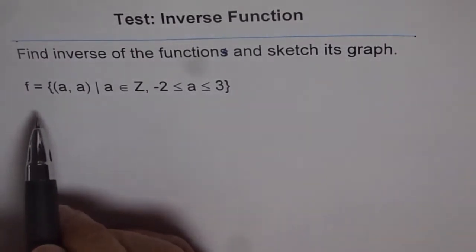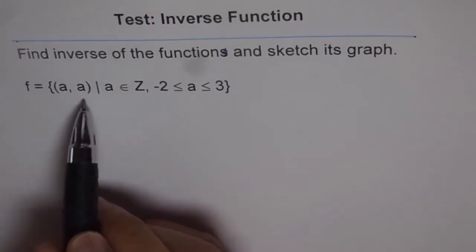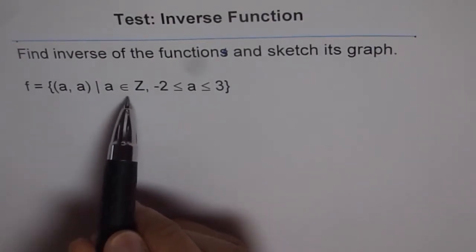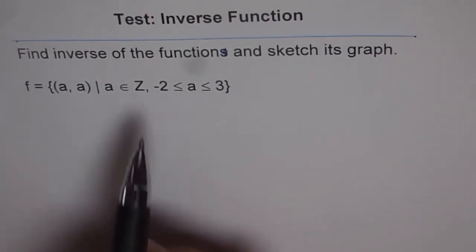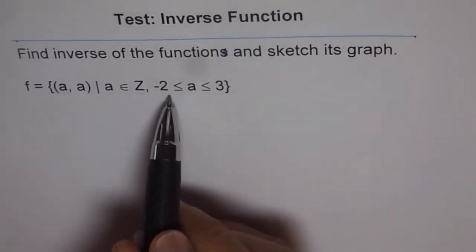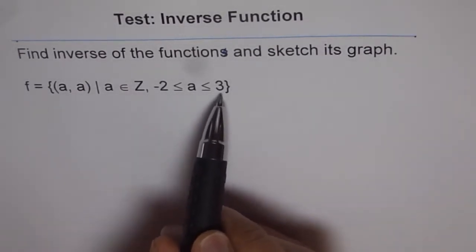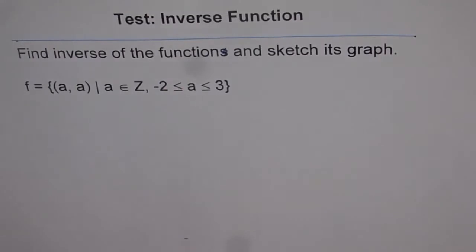Find inverse of the function and sketch its graph. The function is a set of points (a, a) such that a belongs to integers where -2 ≤ a ≤ 3. So this is the given function and you need to find its inverse.